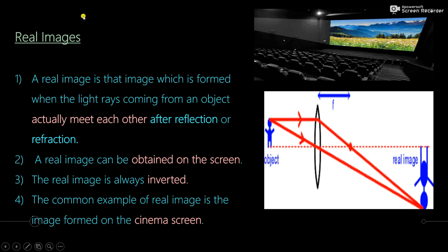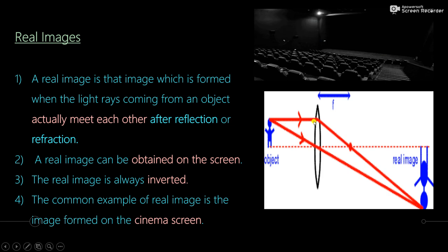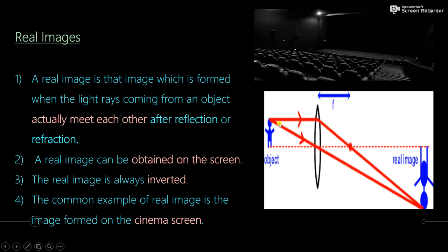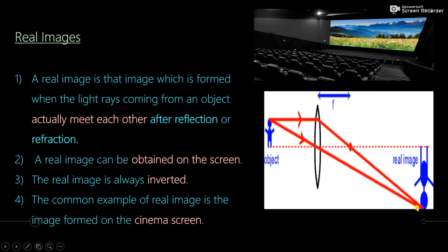There are two types of images that are formed: real images and virtual images. A real image is formed when light rays coming from the object actually meet each other after reflection or refraction. When the rays converge at a point on the other side of the lens, the image formed is called a real image. A real image can be obtained on the screen, and its nature is inverted. The most common example of a real image is an image formed on the cinema screen.